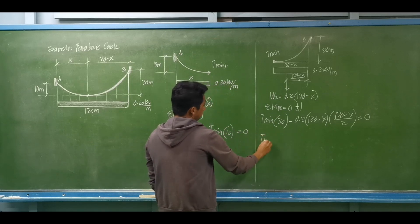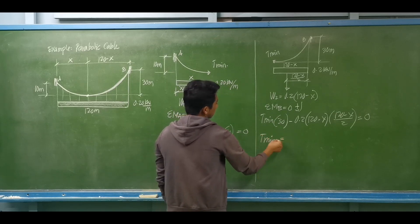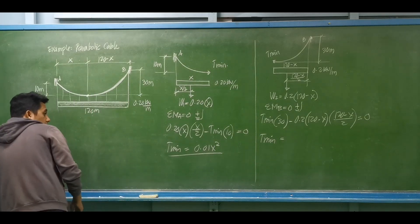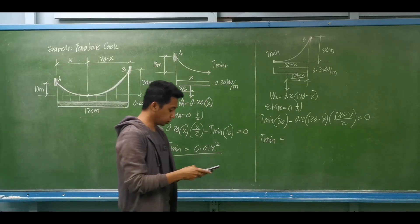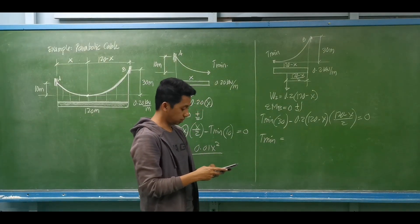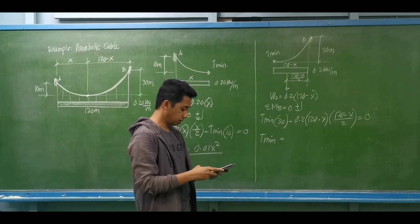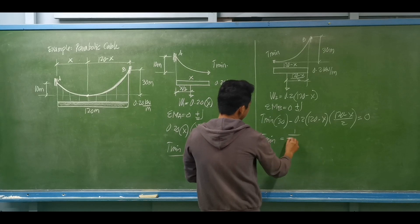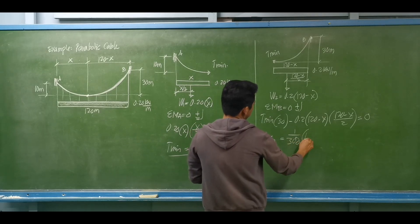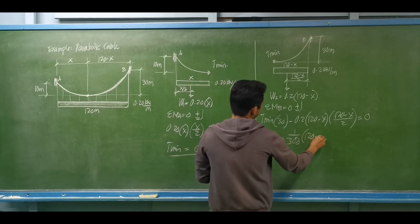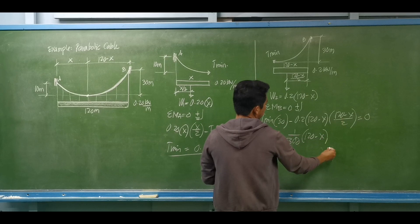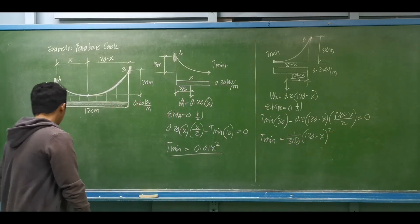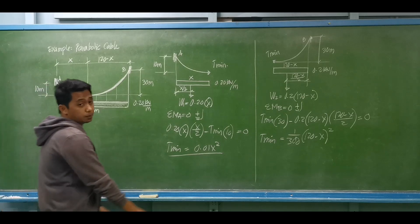From that moment equation at B, we compute T-min in terms of x: T-min equals 0.2 divided by 2 divided by 30, multiplied by (120 minus x) squared. That is (1/300) times (120 minus x) squared. This is equation two. We now have two equations in terms of T-min.